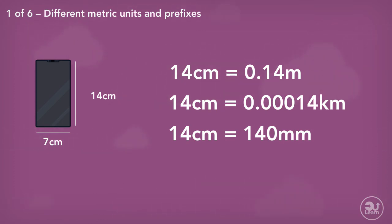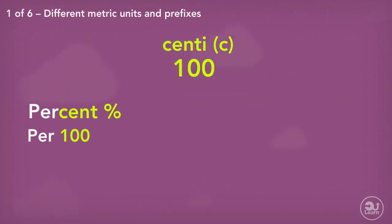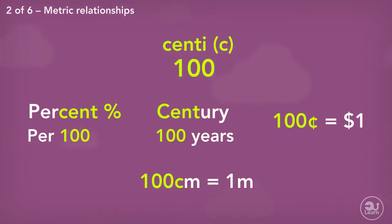So how do we convert between different metric units? For example, we've talked about the centi and kilo prefixes. The word centi has always been linked to 100. Percent is out of 100. A century is 100 years. And there are 100 cents in a dollar. That's why 100 centimeters is equal to 1 meter.